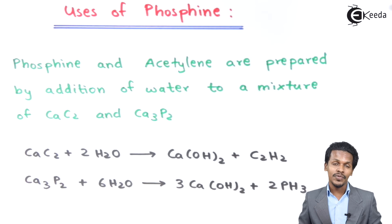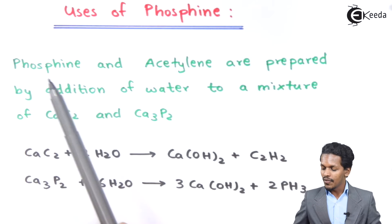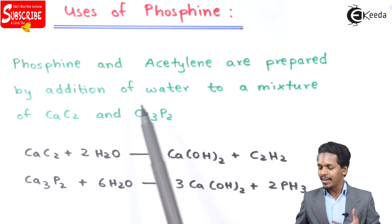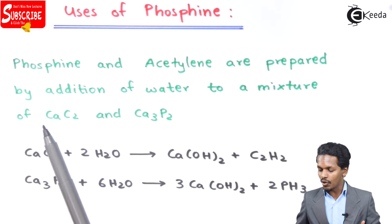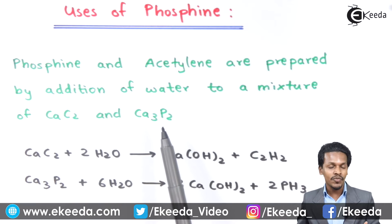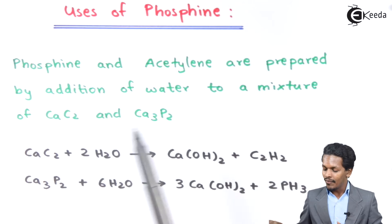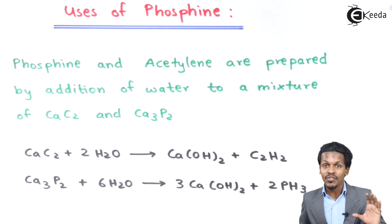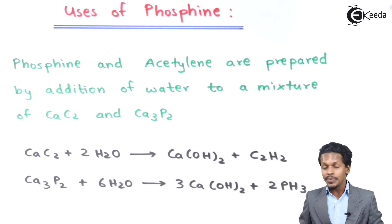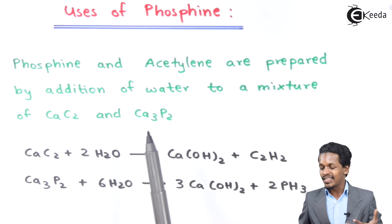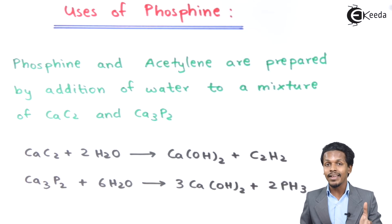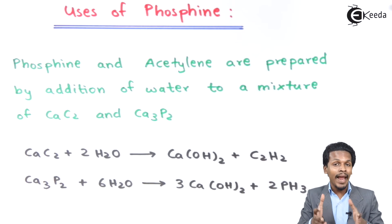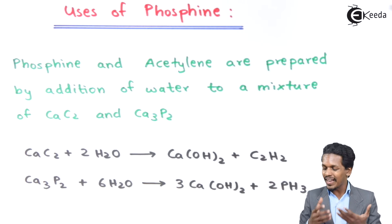Starting with the first point: phosphine and acetylene are prepared by addition of water to a mixture of calcium carbide and calcium phosphate. This is used as Holmes signals for detecting rocks for ships traveling through the sea. A mixture of calcium carbide and calcium phosphate is packed into containers.